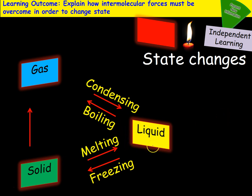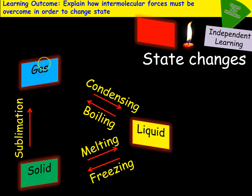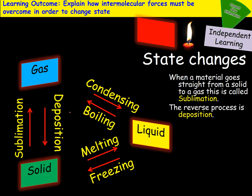We can also skip out the liquid phase altogether. There is a name for a process to go straight from a solid to a gas — this happens with dry ice or also with iodine — and this is called sublimation. If I heat up solid iodine, which is a grey solid, it turns straight into a purple vapour as a gas. The opposite of that is deposition.